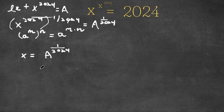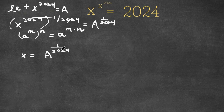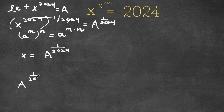So now going back to our equation: x to the power of x to the power of 2024 is equal to 2024. If I plug in a to the power of 1 over 2024 for x, I get a to the power of 1 over 2024, to the power of 2024, is equal to 2024.